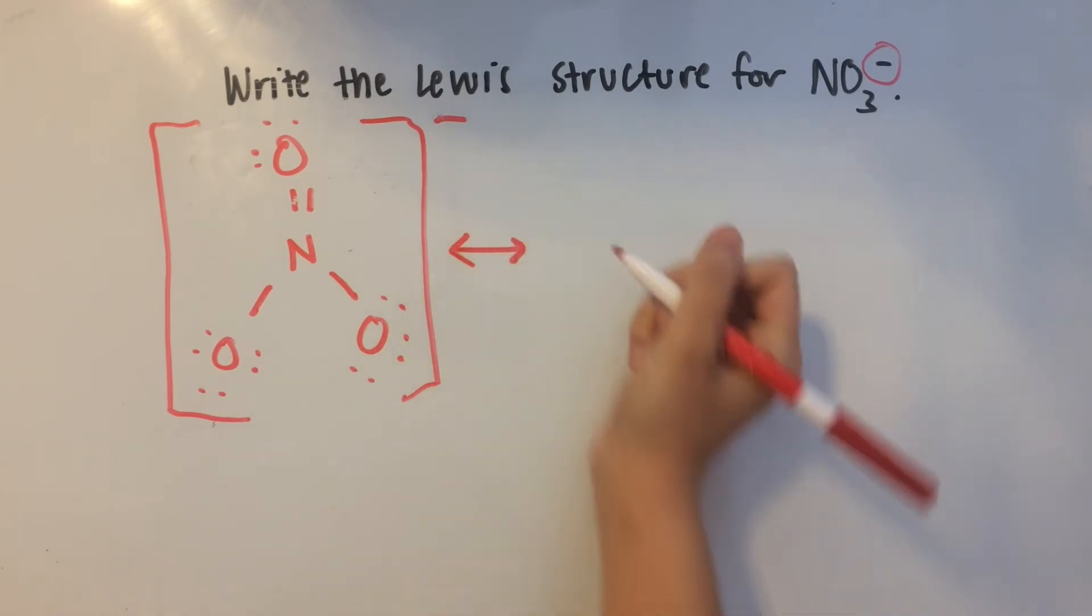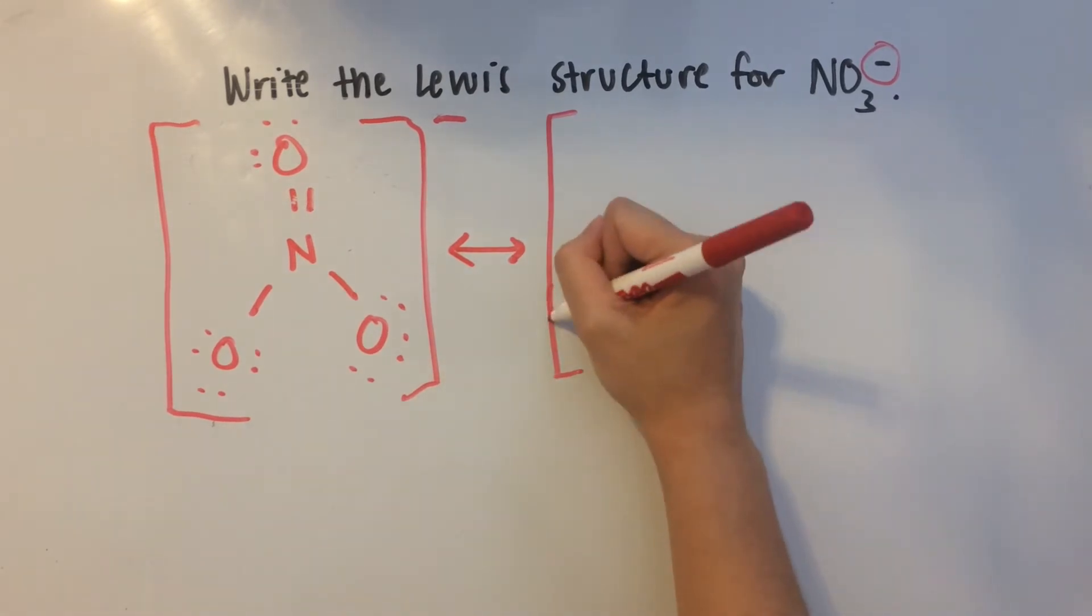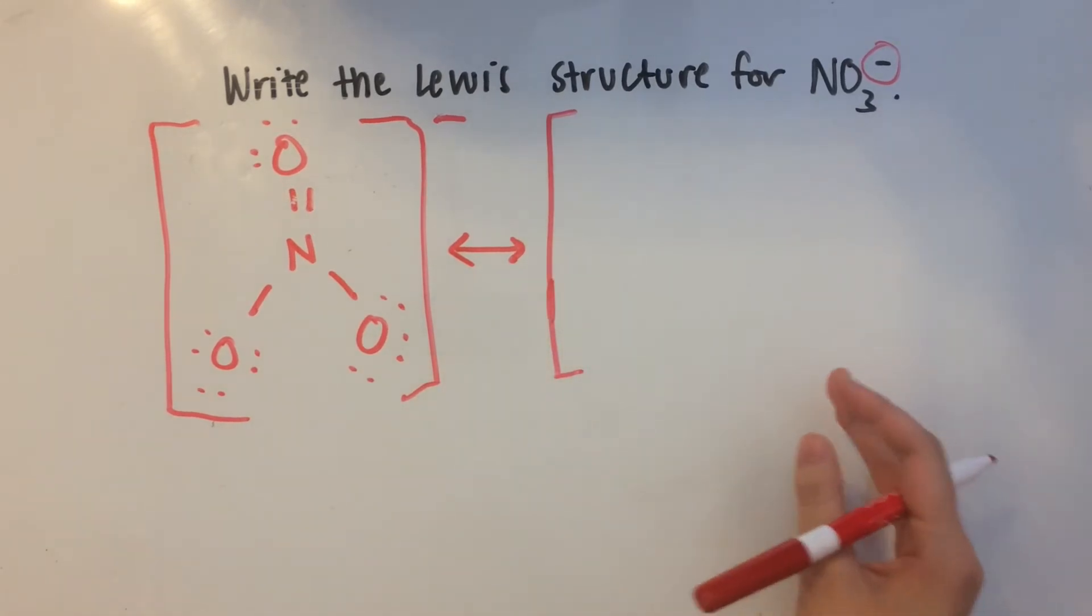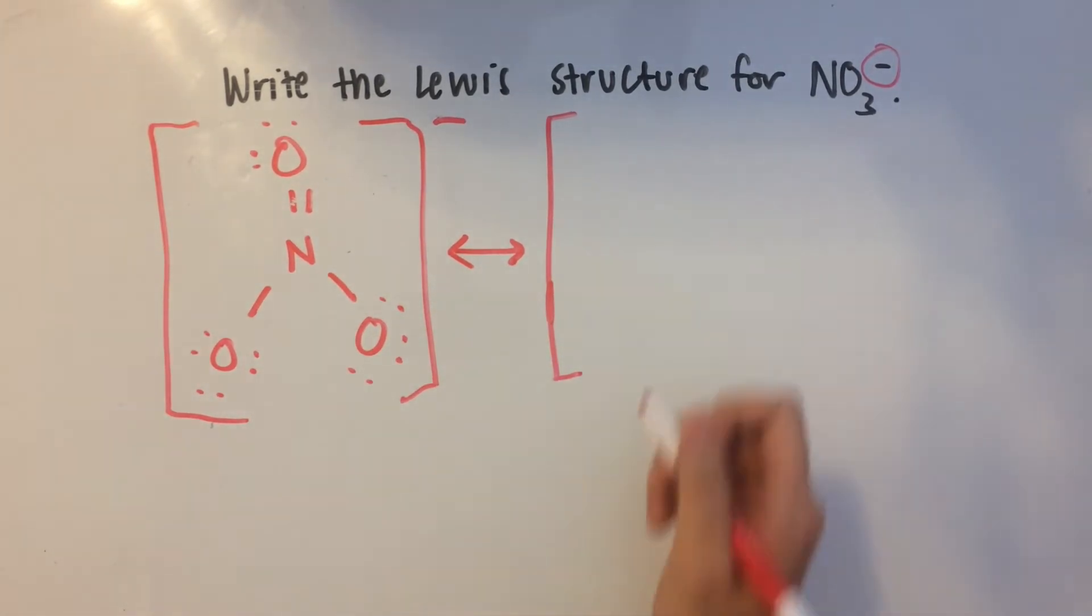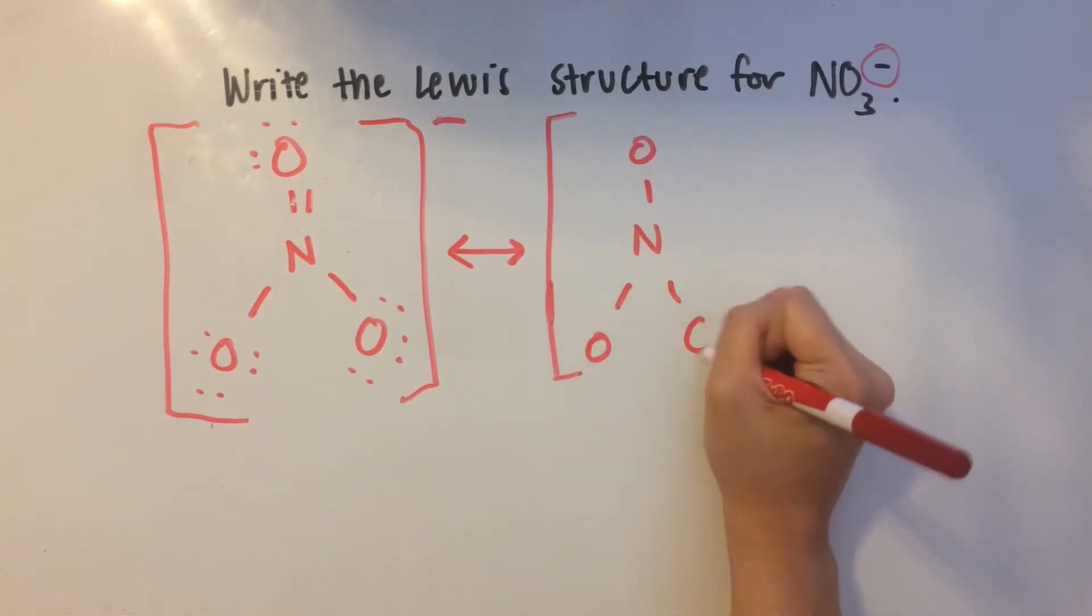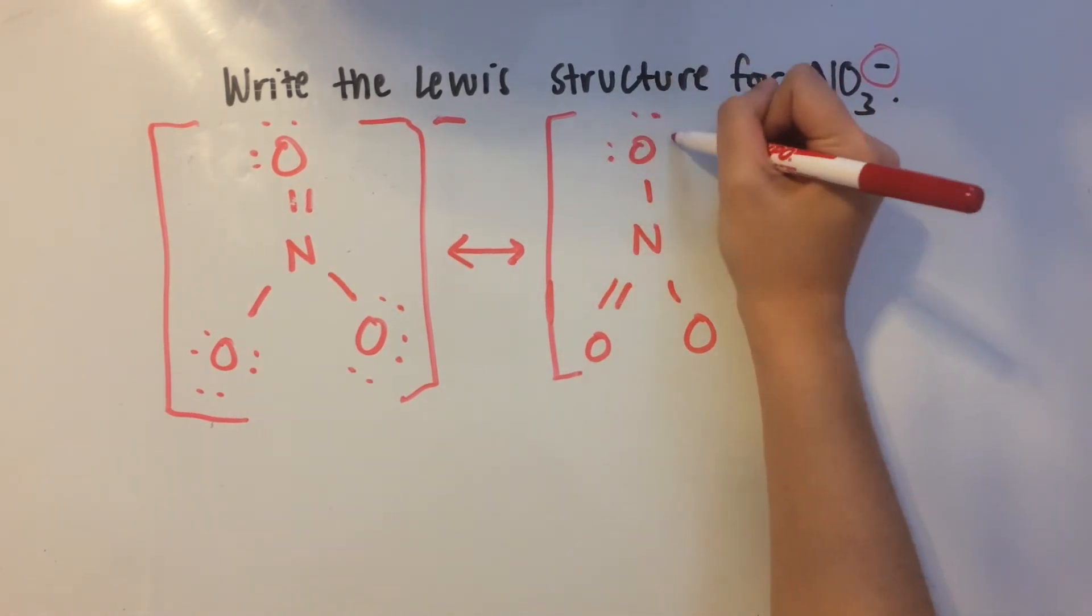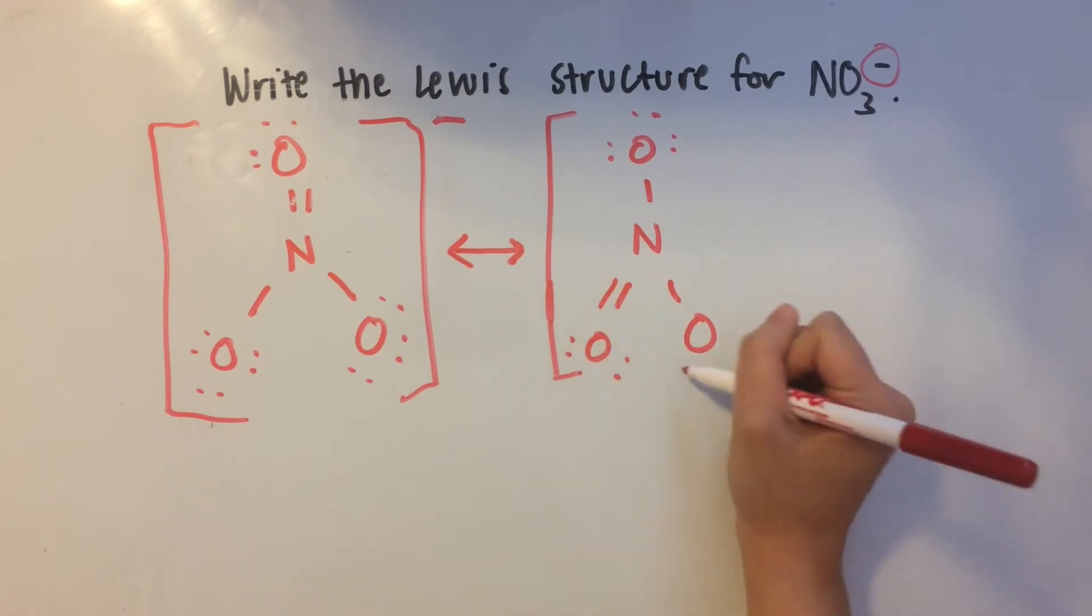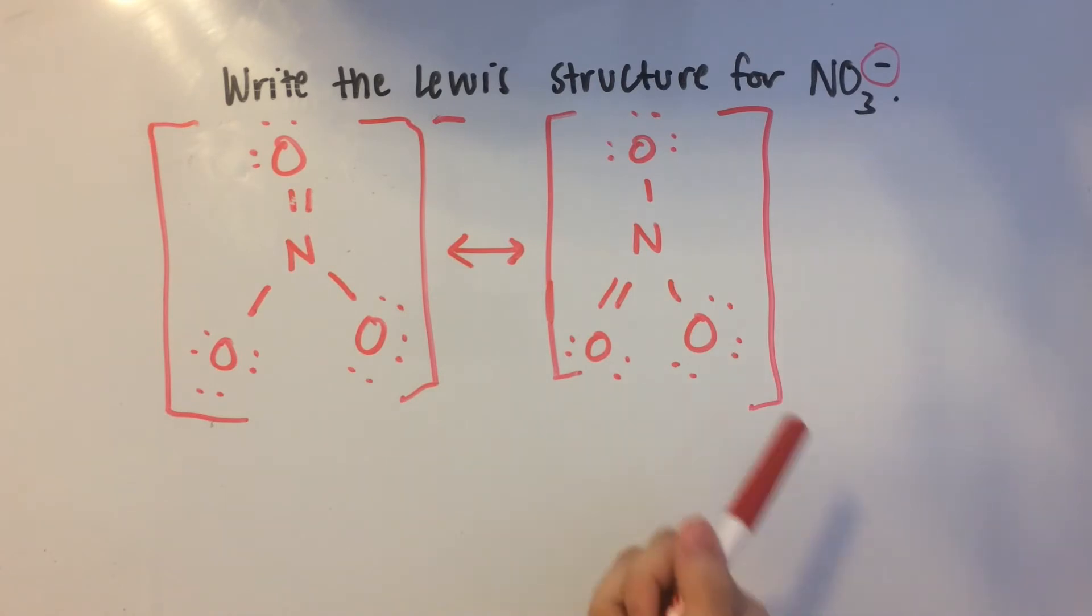And then for resonance, what we do is draw an arrow in between two different structures, or there could be three structures depending on the compound, which shows that there's resonance in between them. So the next Lewis structure that you can make for this actually involves a double bond on this other oxygen. So it looks kind of like this. And if you count, you still have 24 valence electrons.